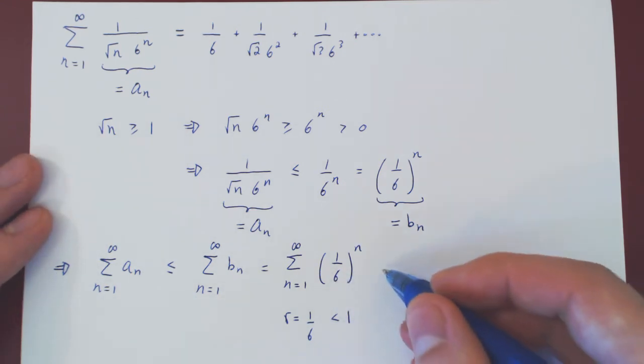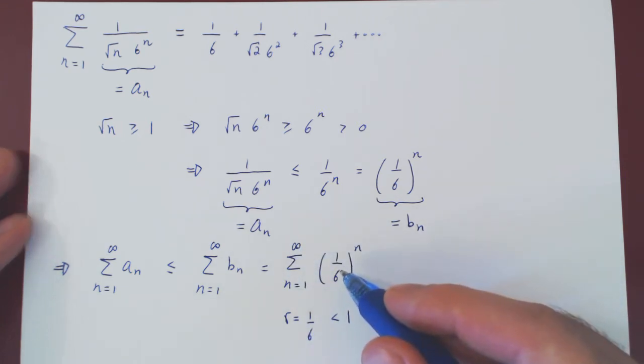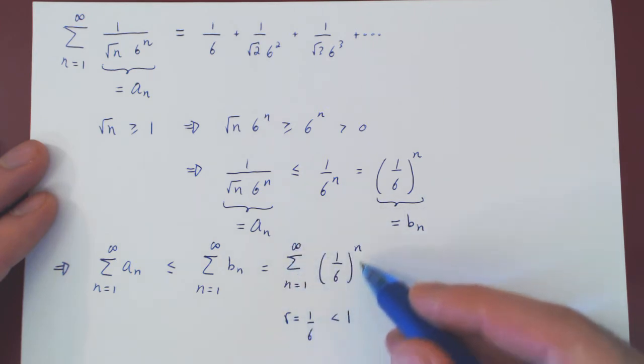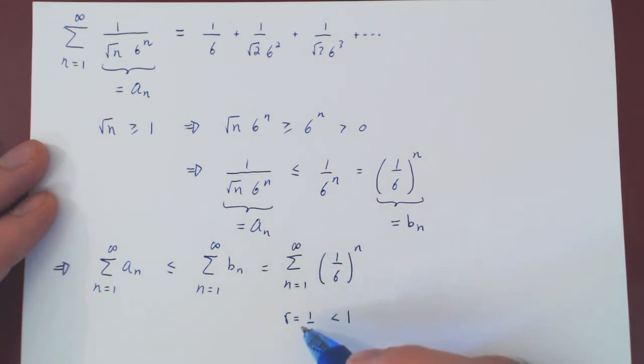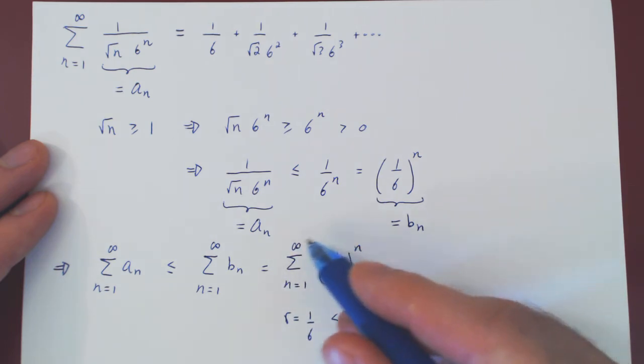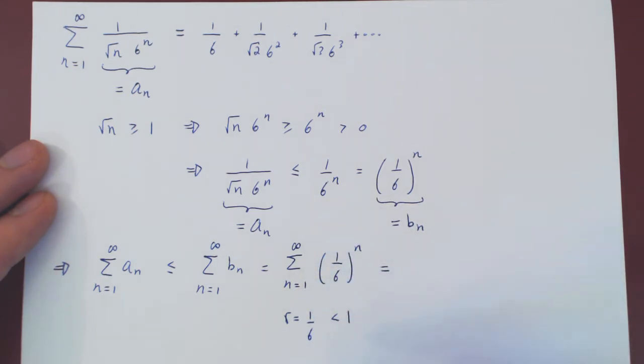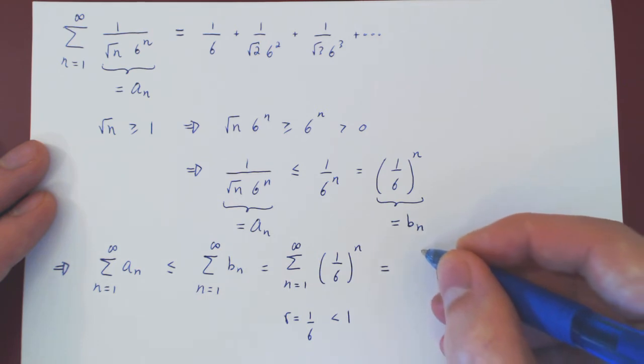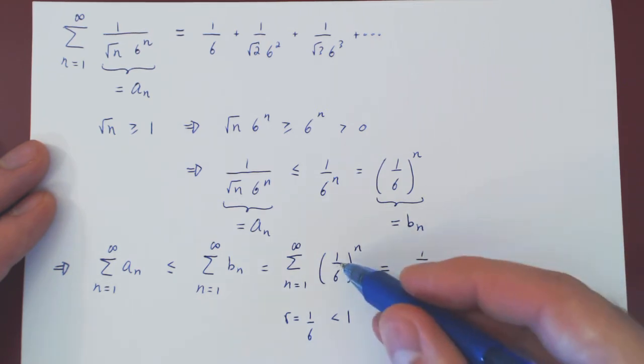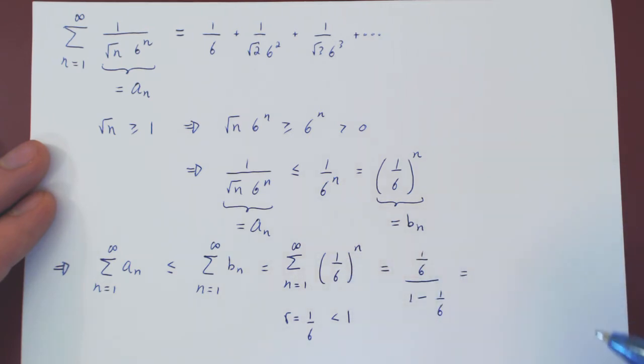And we could here be satisfied with saying this is strictly less than infinity, as it is finite. But we'll go one step further, and we'll evaluate the geometric series as a reminder. Because not only do we have a simple test to tell us, when we have a convergent geometric series, when we do have convergence, we can find the exact value that the series converges to. And if you recall, the exact value is the first term, when n is 1, we have 1 over 6. So the first term, over 1 minus r, and r is also 1 over 6. So what are we left with? 1 over 6. 1 minus 1 over 6 is 5 over 6. If you divide by a fraction, you can multiply by the reciprocal. And in the end, you're left with 1 over 5.